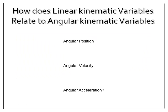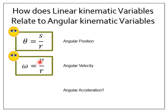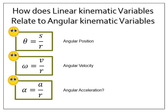Now, here's how to convert from linear land into rotation land. I'm not going to derive these — just state them. For displacement or position: if you know a linear distance s, divide by r to get the angular distance theta. For example, if a bicycle travels 12 meters, divide by the wheel's radius to find how many radians the wheel has spun. Similarly, linear velocity divided by r gives angular velocity omega, and linear acceleration divided by r gives angular acceleration alpha.